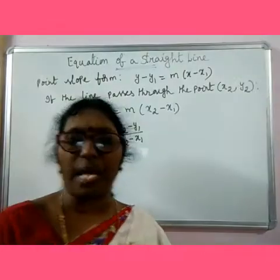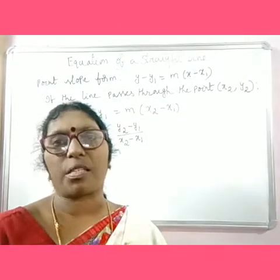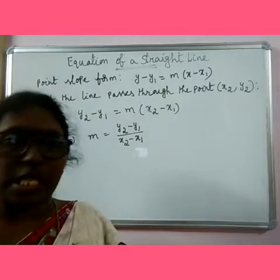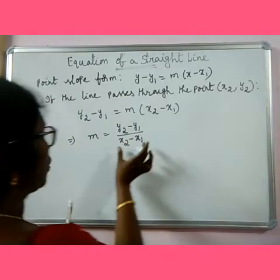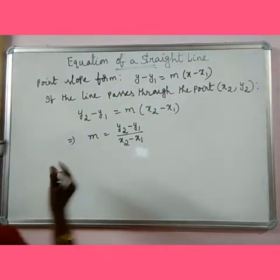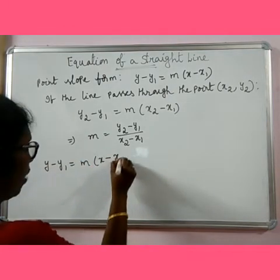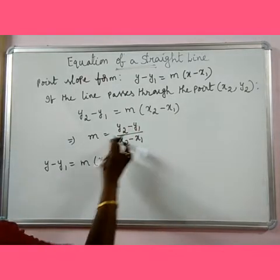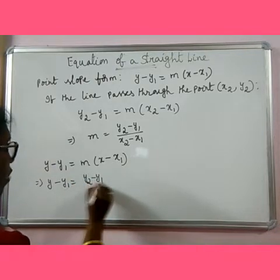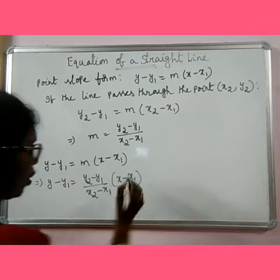If you want to find the slope of a line and you know the coordinates of two points of that line, the difference of y coordinates divided by the difference of x coordinates gives you the slope of the line. Now let us substitute this value of m in the point-slope equation: y minus y1 equal to m into x minus x1. Substituting the value of m, we get y minus y1 equal to y2 minus y1 by x2 minus x1, into x minus x1.